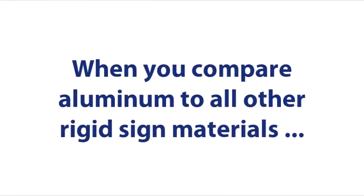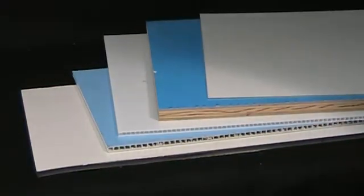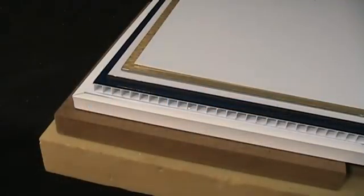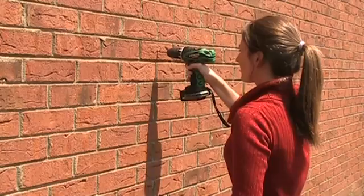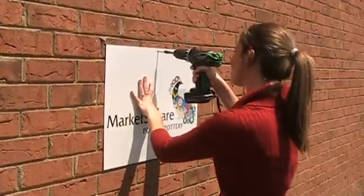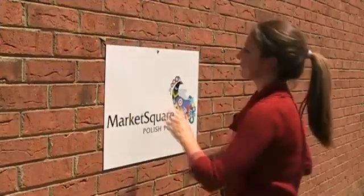When you compare aluminum to all other rigid sign materials like Dye Bond, Alumilite, Plastics and Armor Wood, aluminum typically has the thinnest profile and is therefore the lightest in weight. Being so lightweight makes it easy to install aluminum signs, even for someone like me.